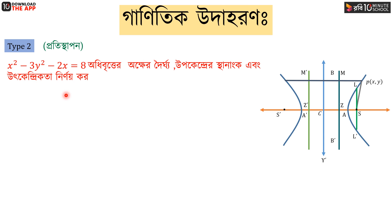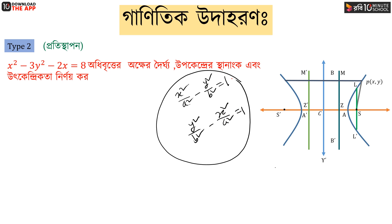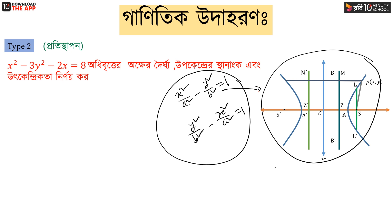First, we have to take a schematic diagram. As we can see, we have two standard formats: the first is x² divided by a² minus y² divided by b² equal to 1, and the other standard format is y² divided by b² minus x² divided by a² equal to 1.